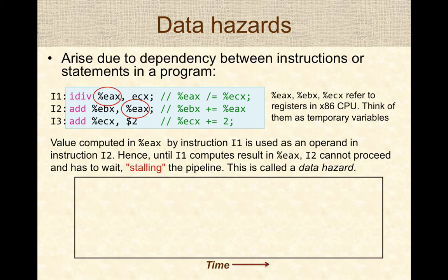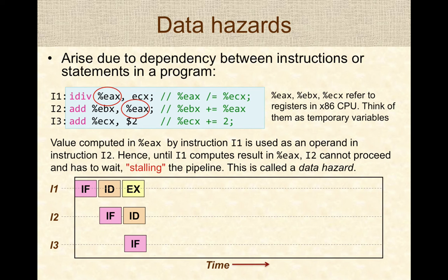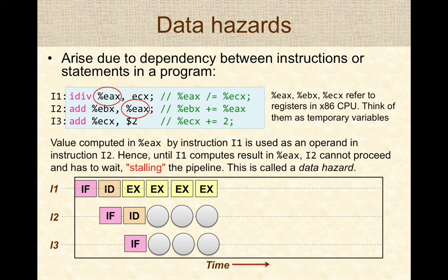From a graphical perspective: instruction one is fetched, then decoded while instruction two is fetched. Instruction one starts the division operation; instruction two is decoded and the CPU knows it needs the result from instruction one. Unfortunately, instruction one requires more clock cycles, so instruction two stalls — illustrated as bubbles or circles in the pipeline. Instructions two and three must wait until instruction one finishes executing, and these stalls propagate through the pipeline. In this case, three cycles are missed, impacting throughput.